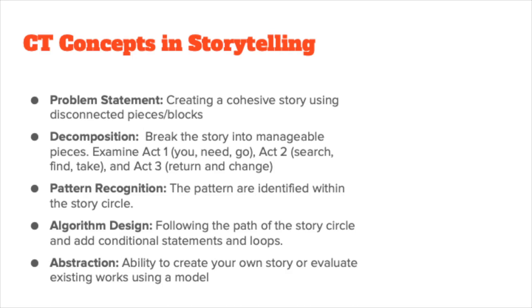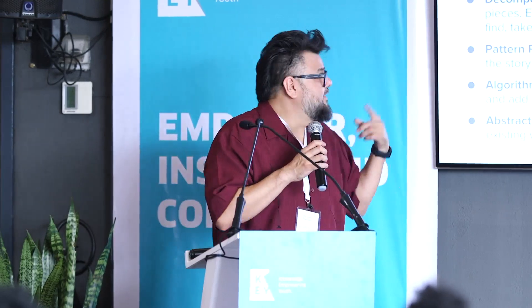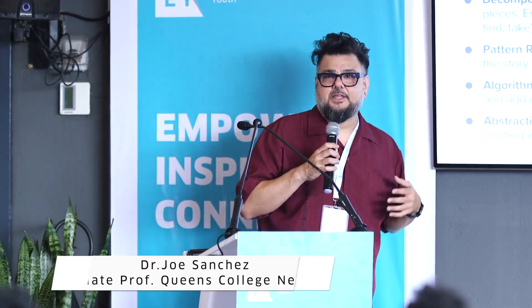Pattern recognition — we'll identify patterns within the story because they're already built into the story circle. Algorithm design follows the path of the story circle. Think about how algorithms work in social media: on Instagram, certain words, poses, and hashtags make your post rank higher — people play the algorithm. That's pattern recognition in action, similar to search engine optimization on websites. Then abstraction — we'll create our own story out of completely random pieces, making something easier to understand while ignoring irrelevant details.